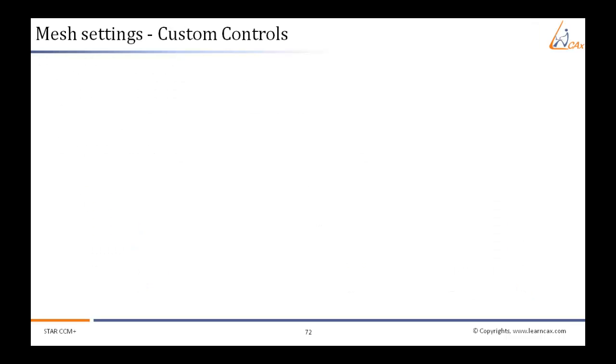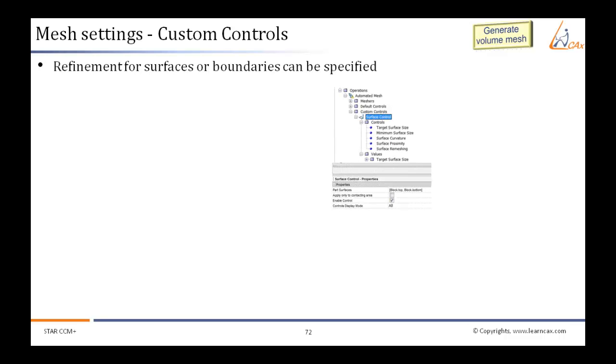Whatever we saw till now were the default controls. Now, if we need to further produce any changes in the mesh size and density, we need to use custom controls. Using custom controls, we can generate refinement for surfaces or boundaries.